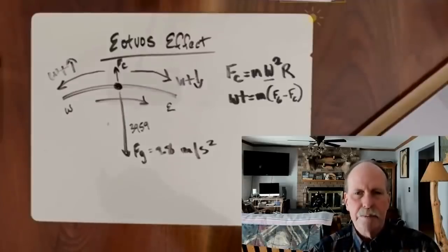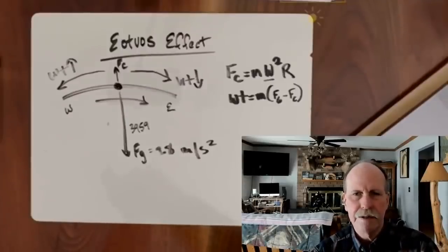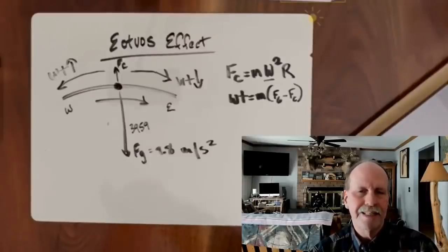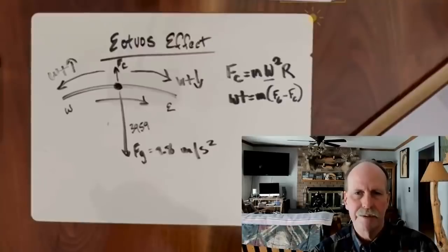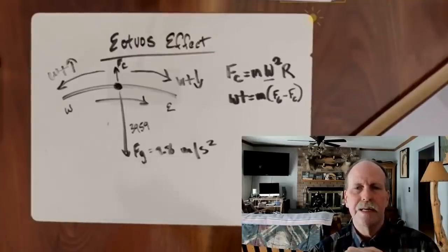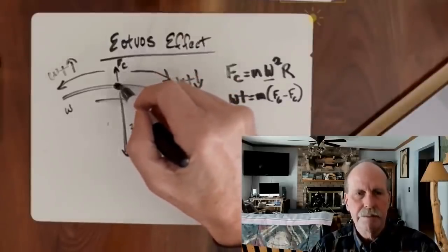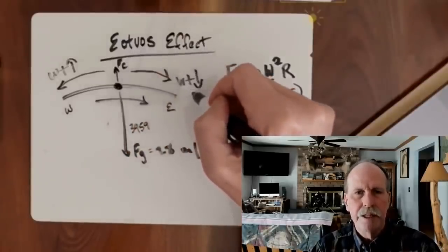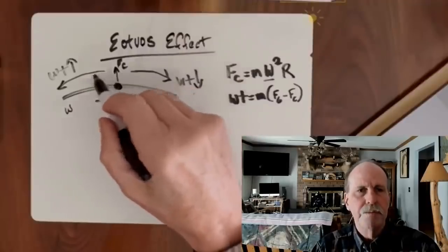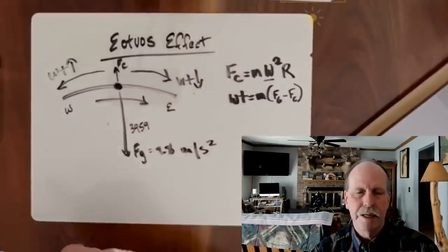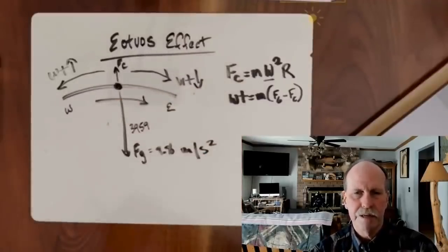We can design an experiment to test this. We are not testing the radius of the Earth, the shape of the Earth, or the baseline rotational velocity of the Earth. What we are testing is: does weight change from a stationary position to moving east versus moving west? This is a direct test of the Eötvös Effect.